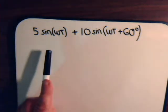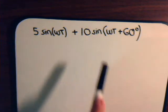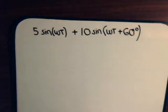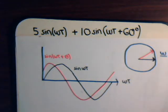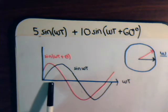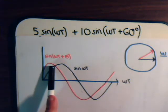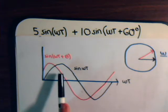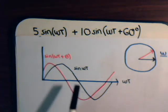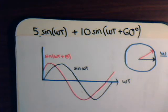We could graph both of these out and then try to add the two graphs together. For example, here we have sine omega t and here we have sine omega t plus theta — two different curves — and we could add these curves together point by point. That would be one way to add them together, but it would be quite a long process. So the better way is what we demonstrated in the previous video: by using phasors.